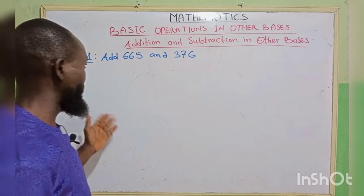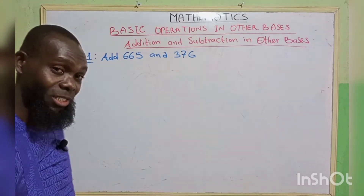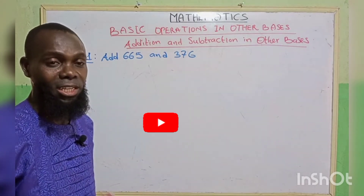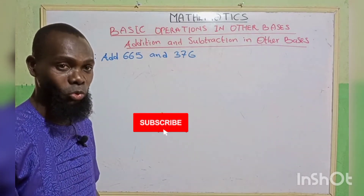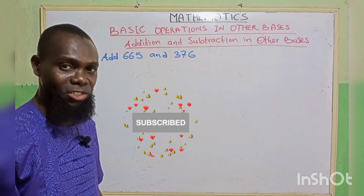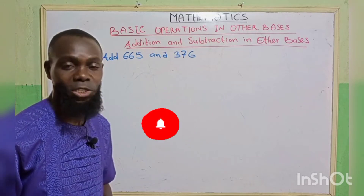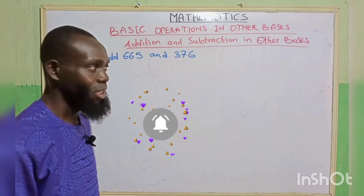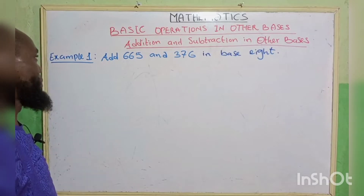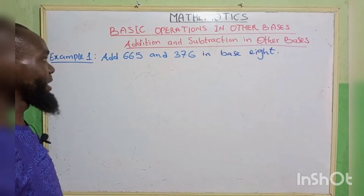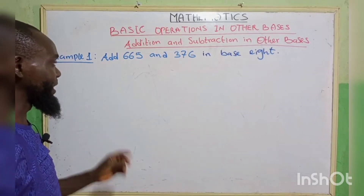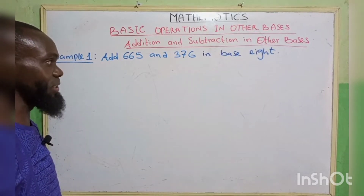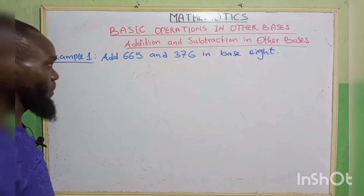Just before we move on into our examples, if you have not subscribed to this channel, kindly do so and click the notification bell for my subsequent classes. Now, Example 1: add 765 and 376 in base 8.